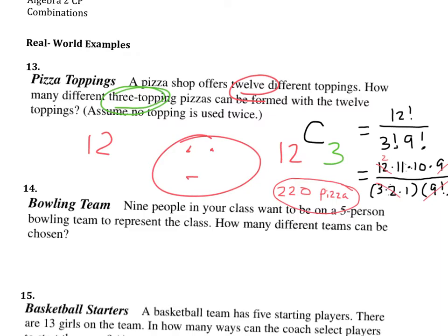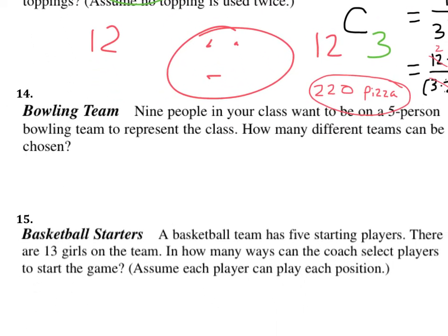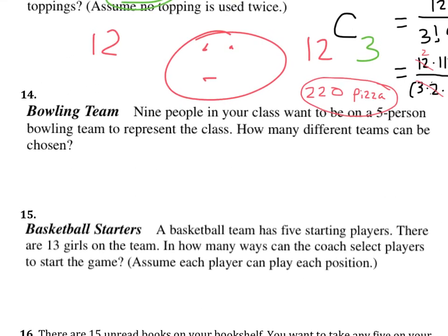Let's take a gander at number 14 while we're here. Nine people in your class want to be on a five-person bowling team to represent the class. Go bowlers! So how many different teams can be formed? Well, it's simply this. We have nine people total. We have a combination. And we have a desired amount of five.